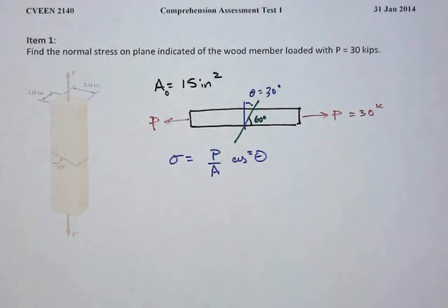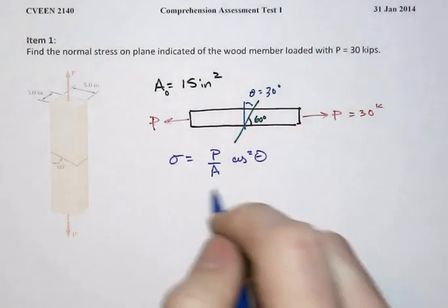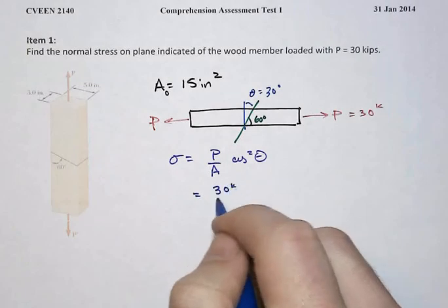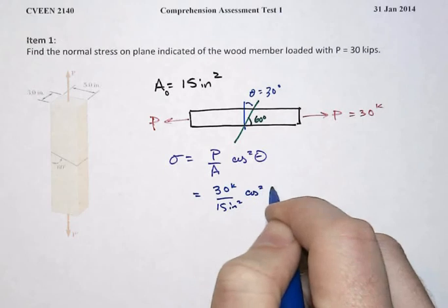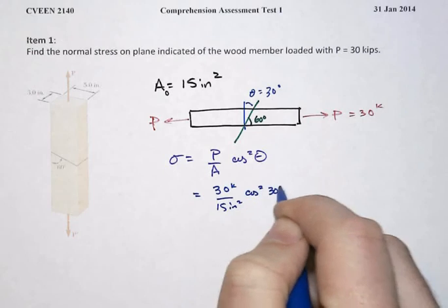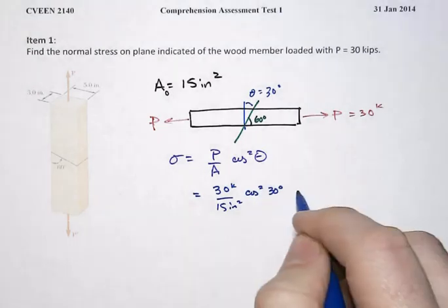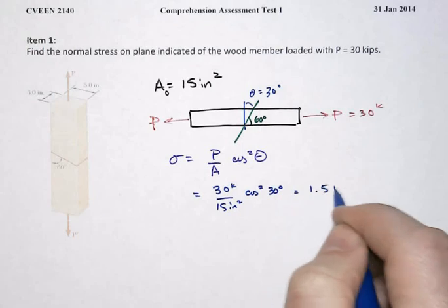After that it's a fairly straightforward calculation. We're going to substitute in for the axial force 30 kips over 15 square inches times cosine squared of 30 degrees, which will ultimately give us a stress of one and a half ksi.